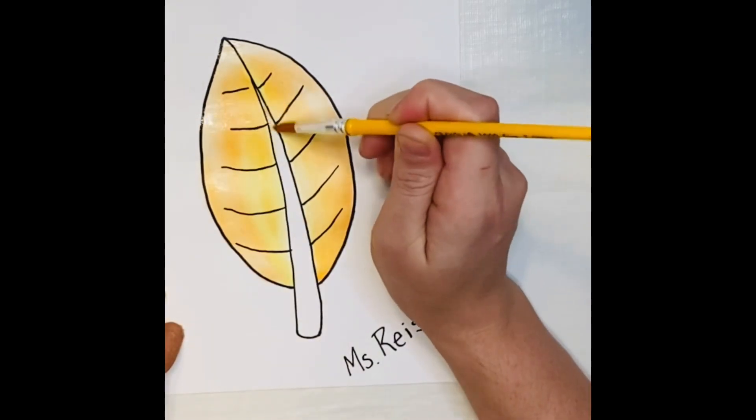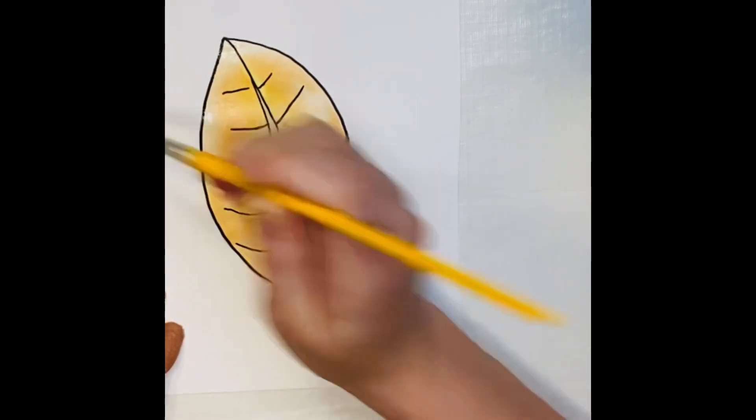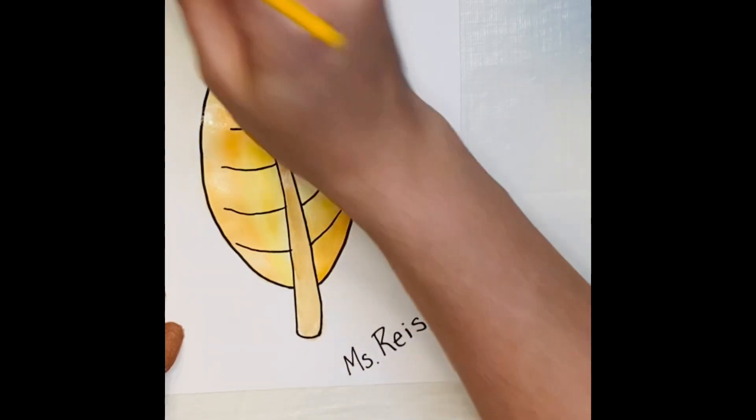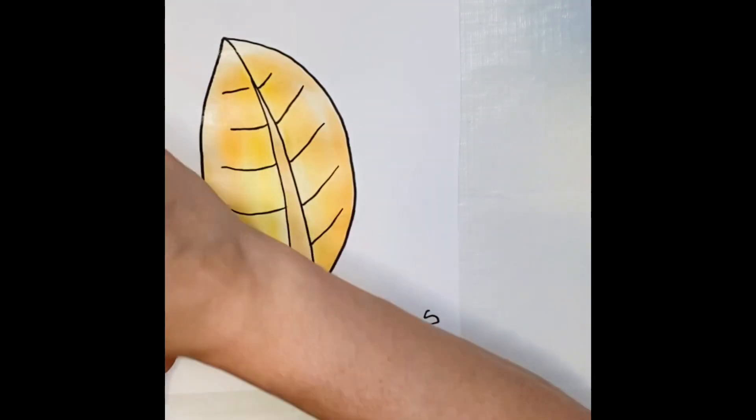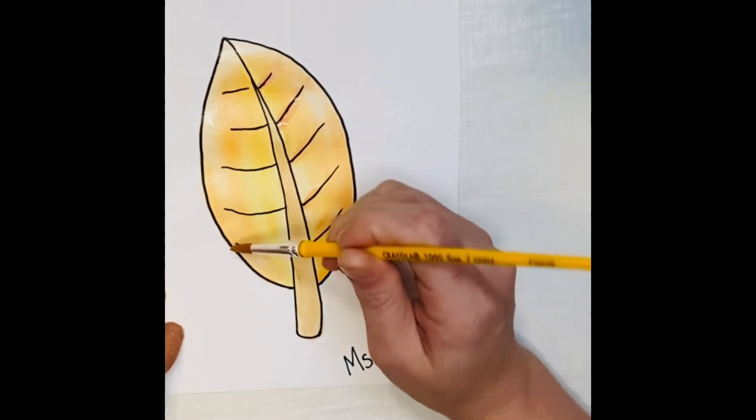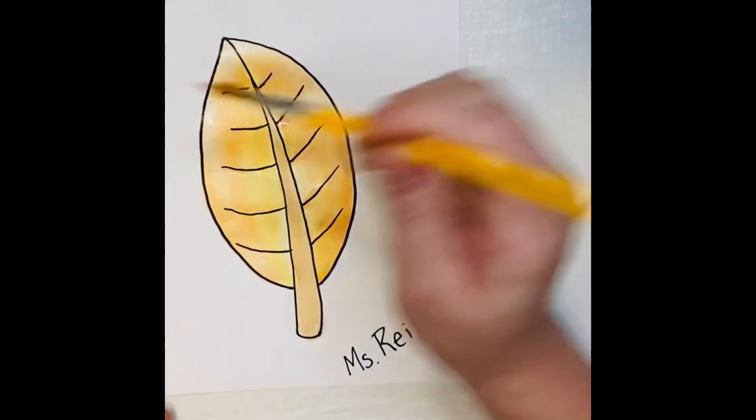The more water you add, the farther your color will go. I'm using orange, yellow, and for my stem, I'm using a little bit of brown. This is going to give the effect of a fall leaf. I'm going to add in some color on my veins as well.